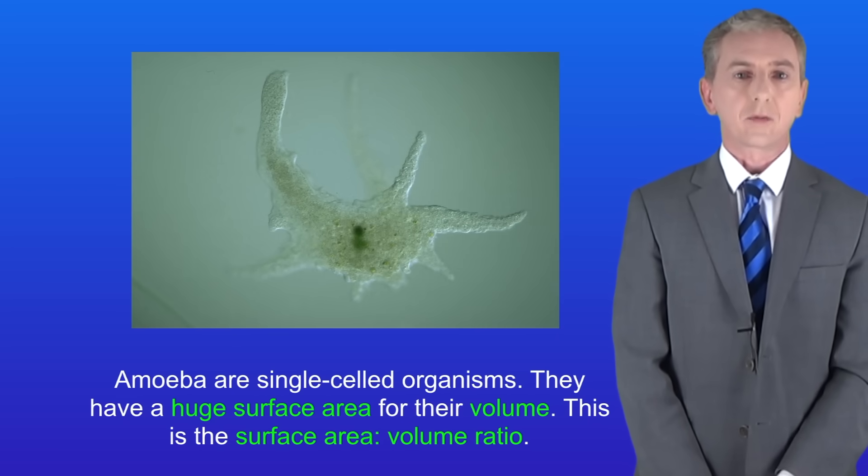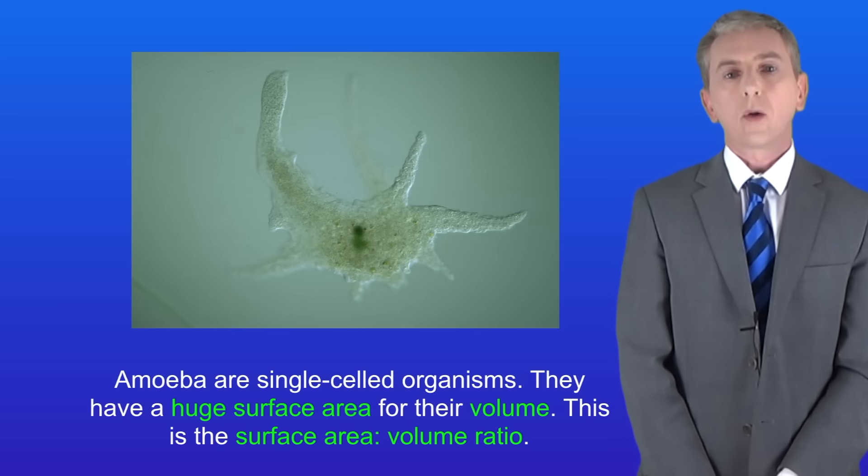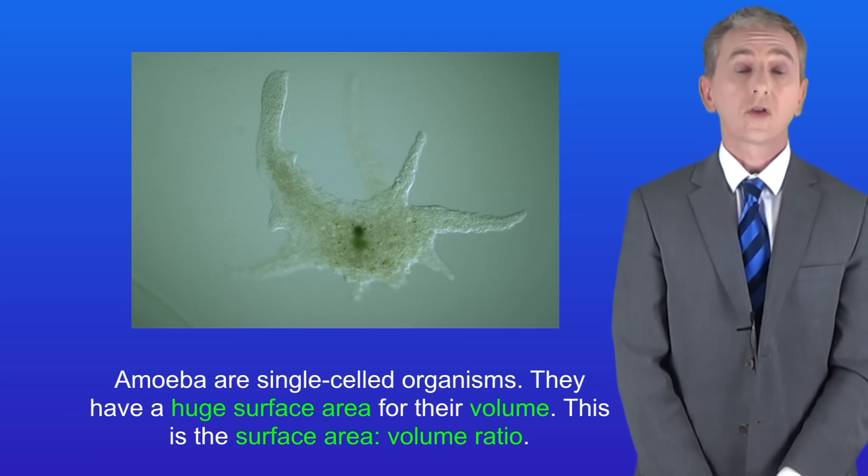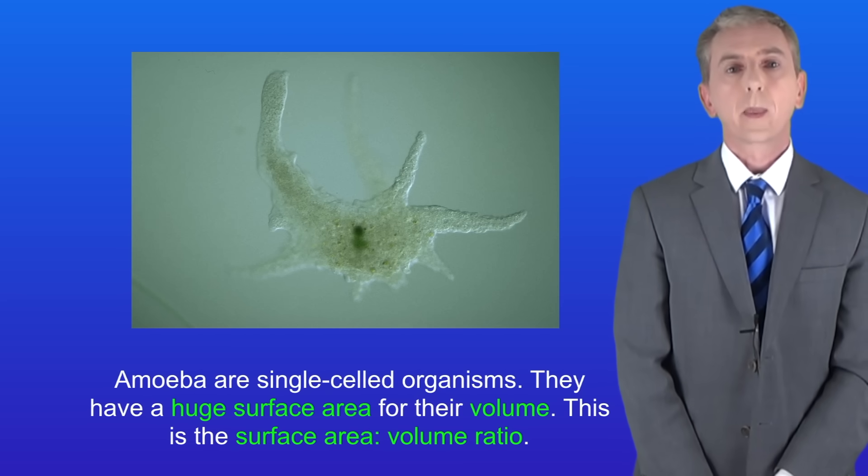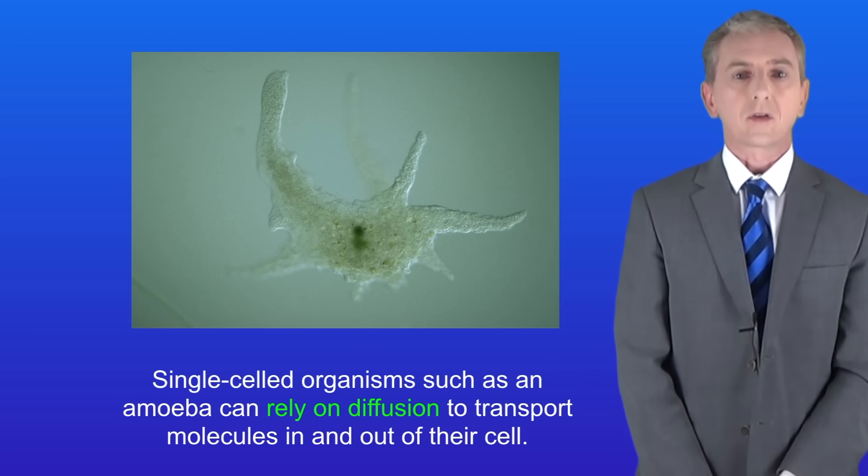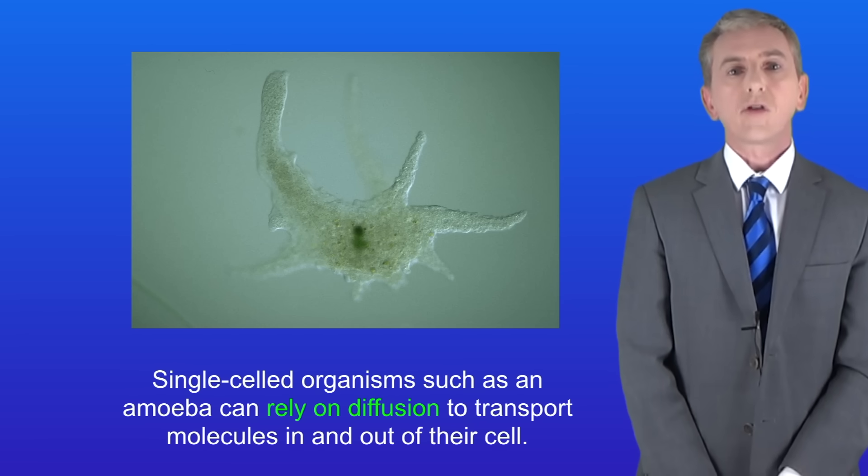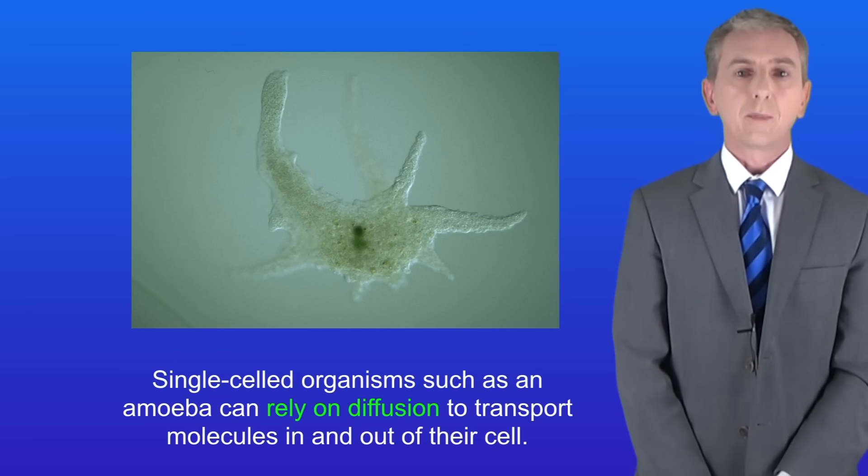This shows a single celled organism called an amoeba. Organisms like this have a huge surface area for their volume. Scientists call this the surface area to volume ratio. Single celled organisms such as an amoeba can rely on diffusion to transport molecules in and out of their cell. So for example, all of the oxygen that the amoeba needs simply diffuses in through its membrane.